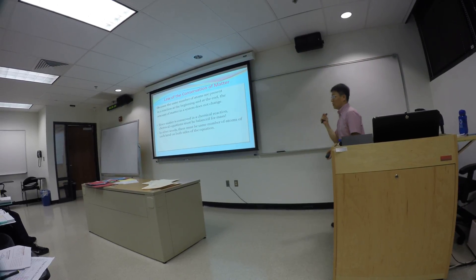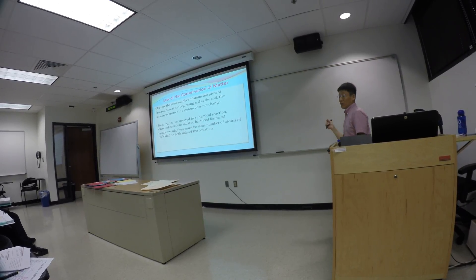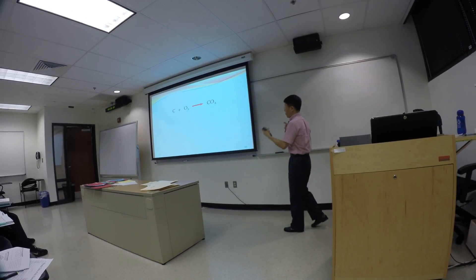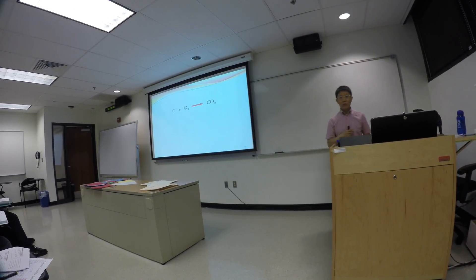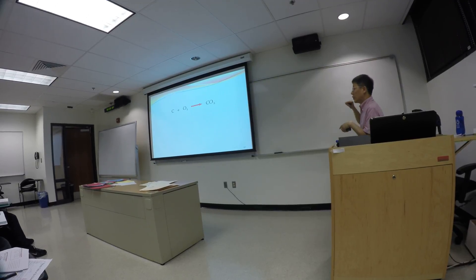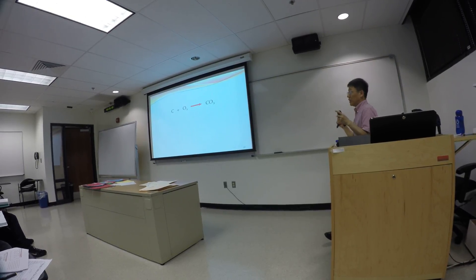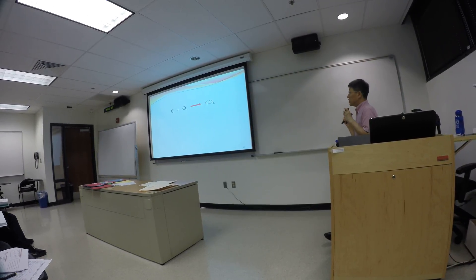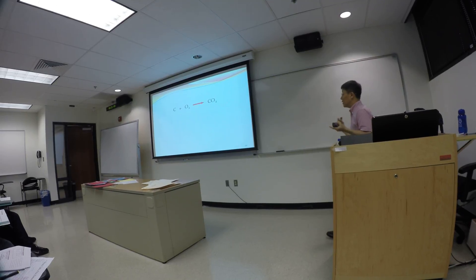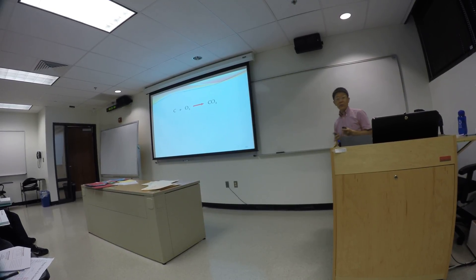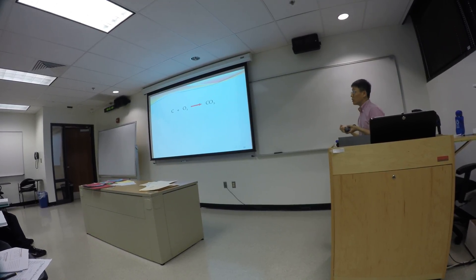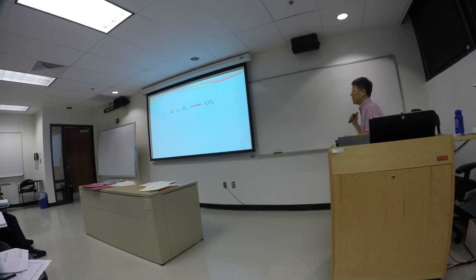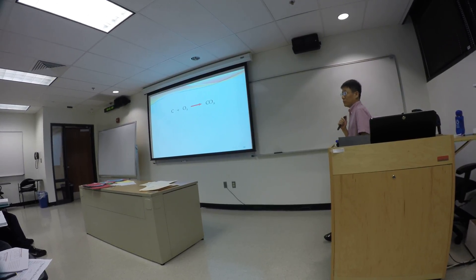When we look at the chemical reaction equation, the first thing we need to look at is how many atoms of each kind we have on both sides of the equation. If we don't have an equal amount of atoms of each kind, then we have to do something to balance it.